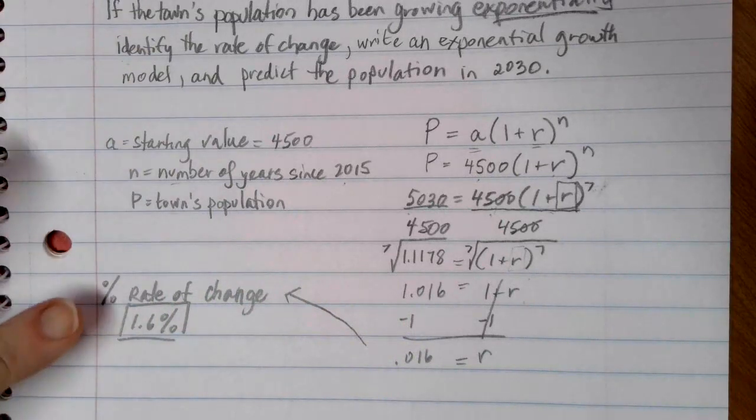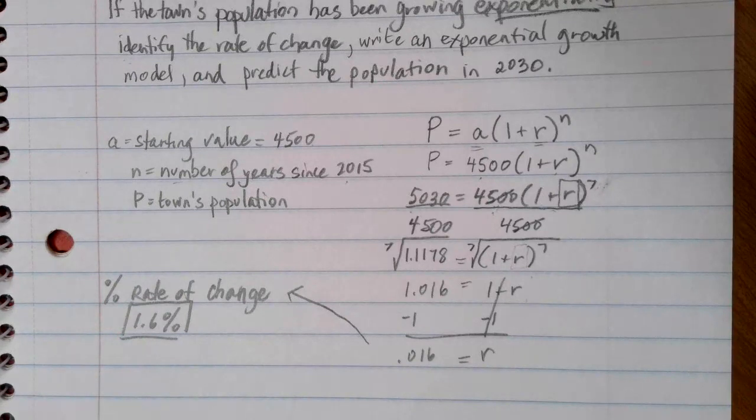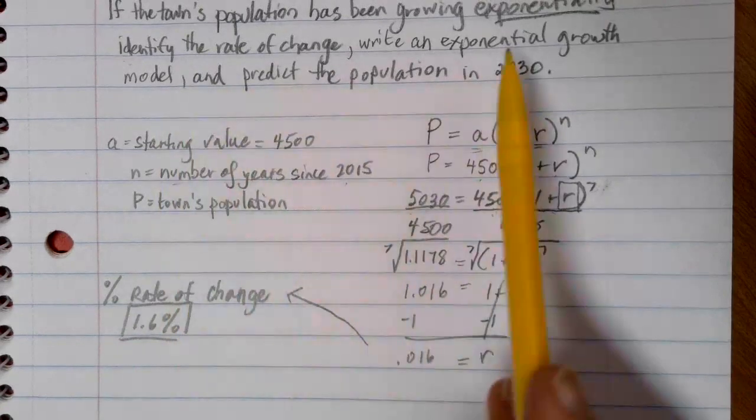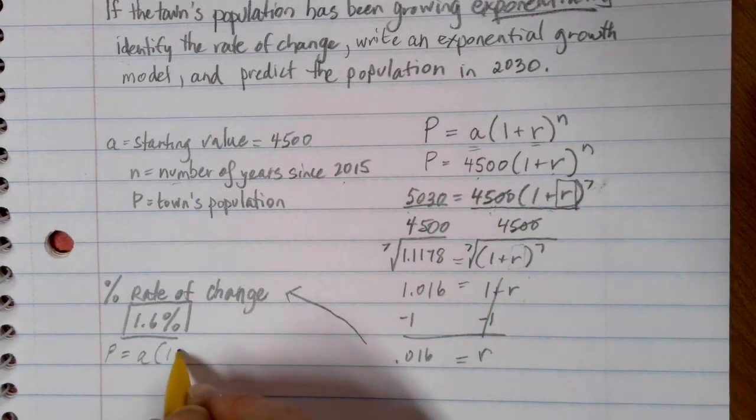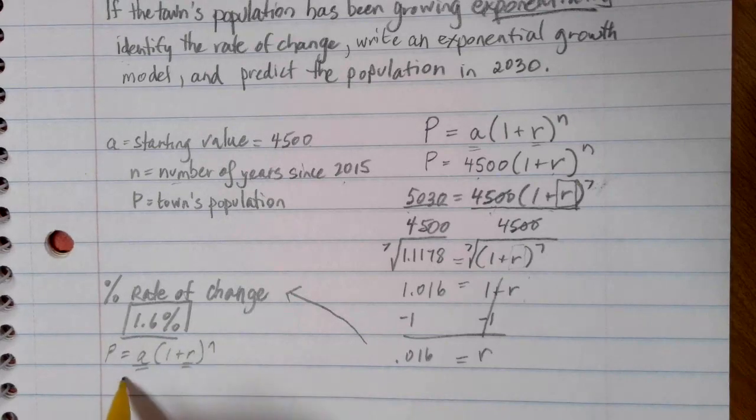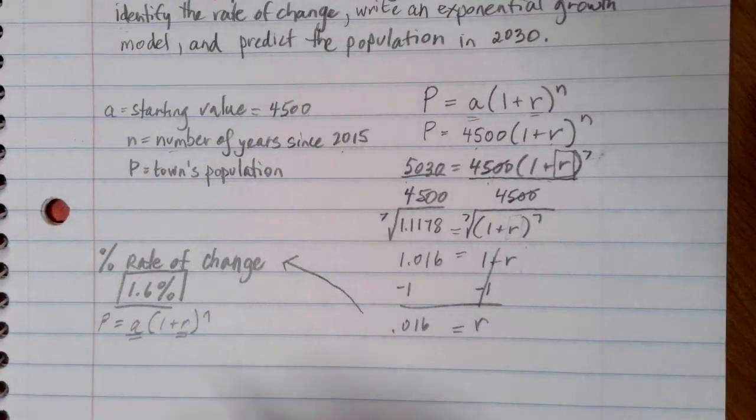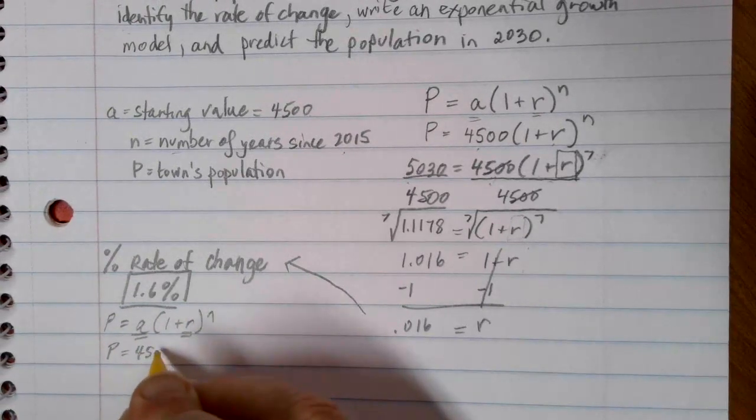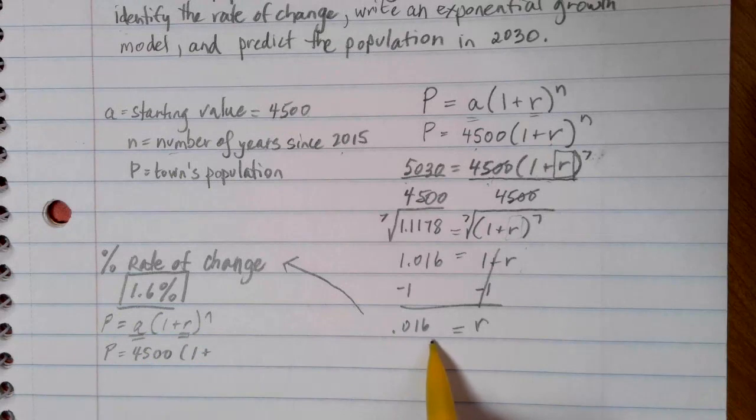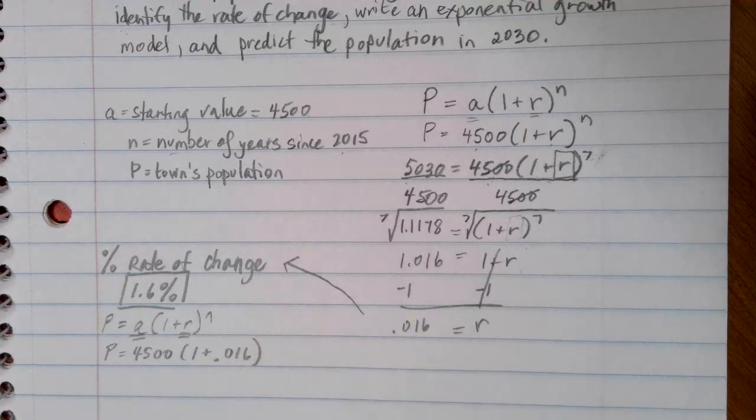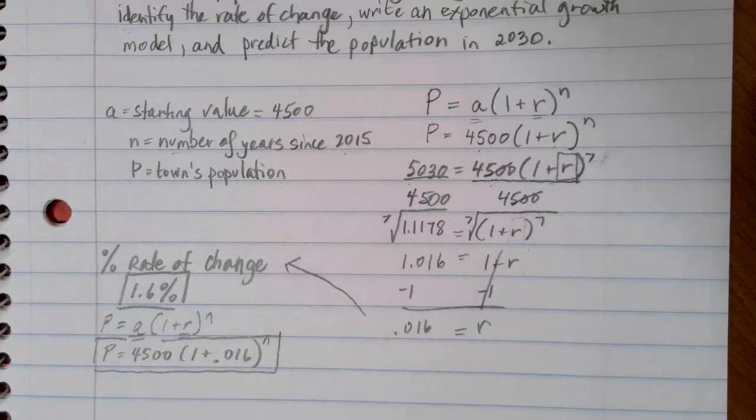I can say that my town has been growing at a rate of 1.6% every year. The next part of the question asks us to write an exponential growth model for this situation. My A is that 4,500, which is the town's population in 2015. My rate I just calculated, and I need the decimal version of it in my formula, so I'm going to put in 0.016, and then to the Nth power. So this is my exponential equation model.